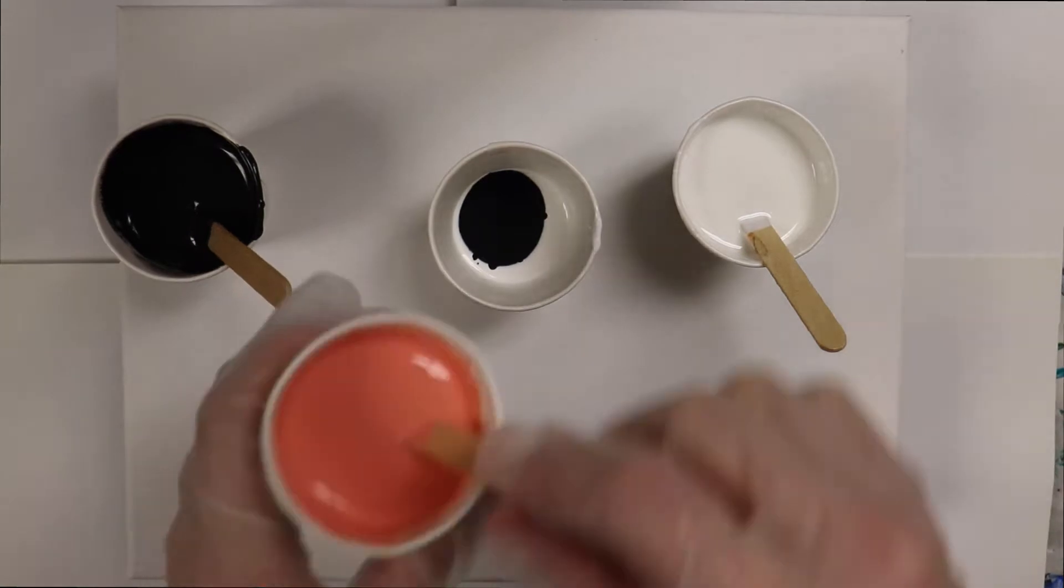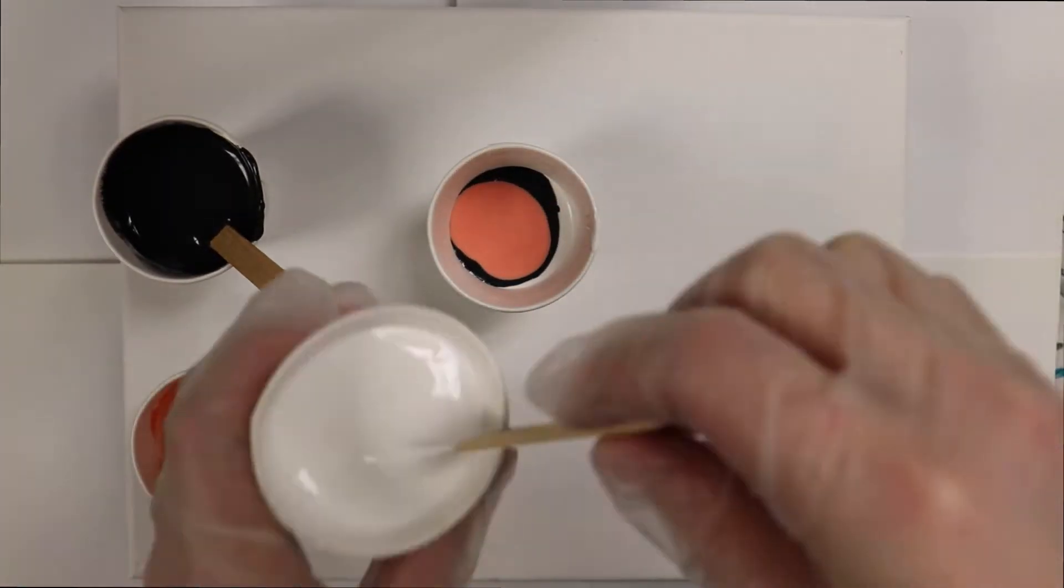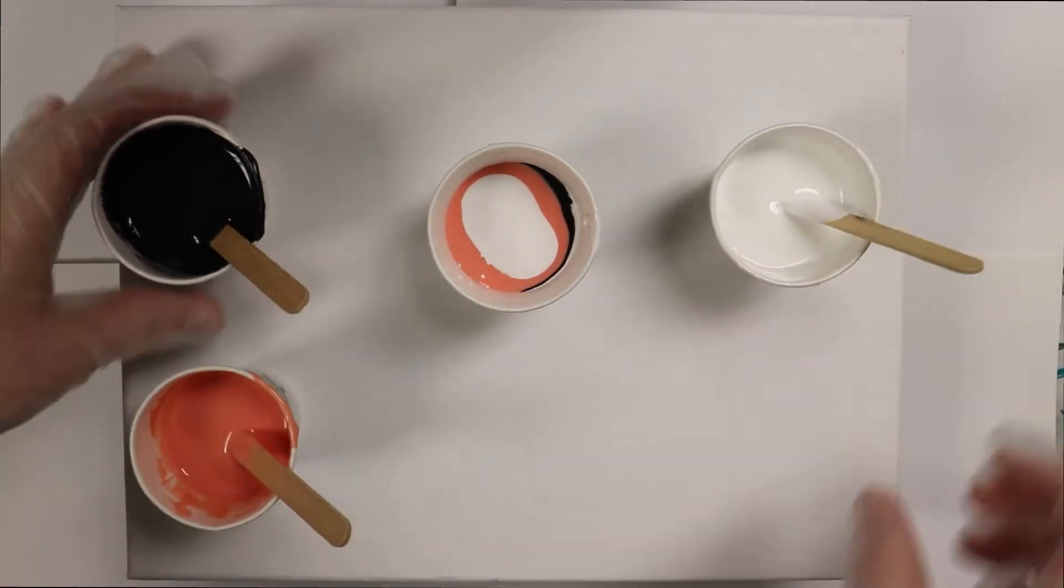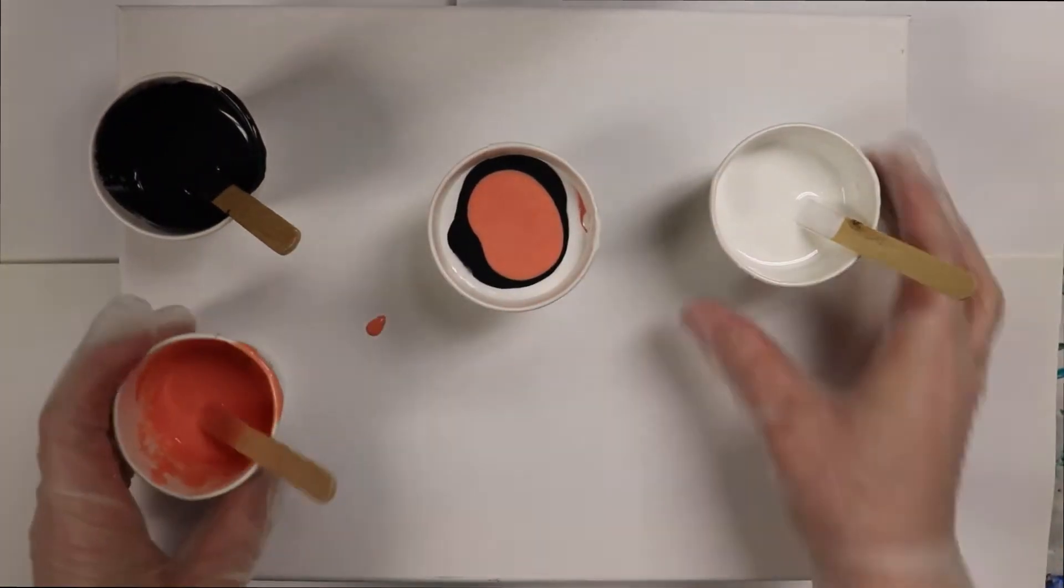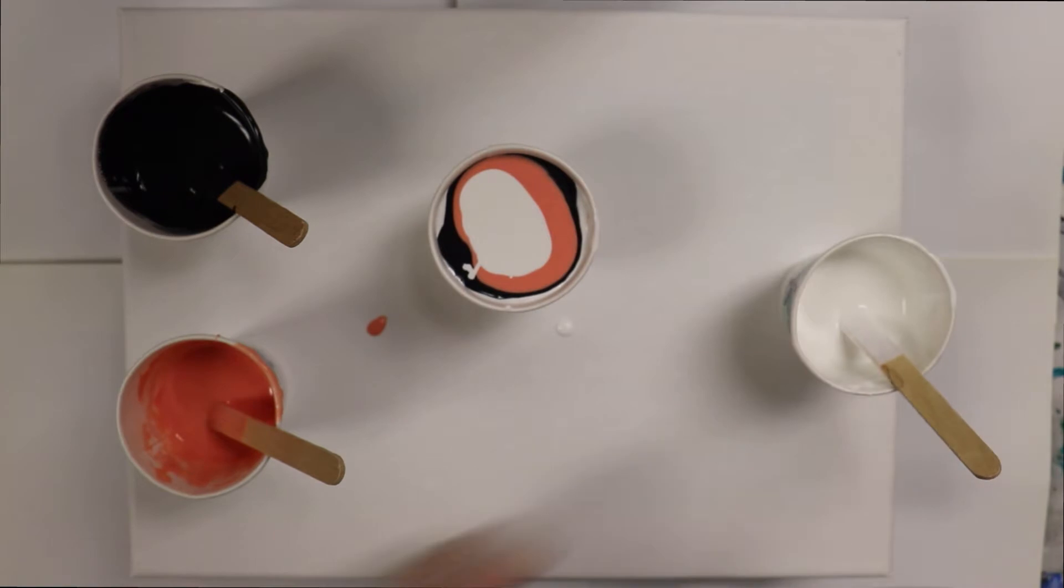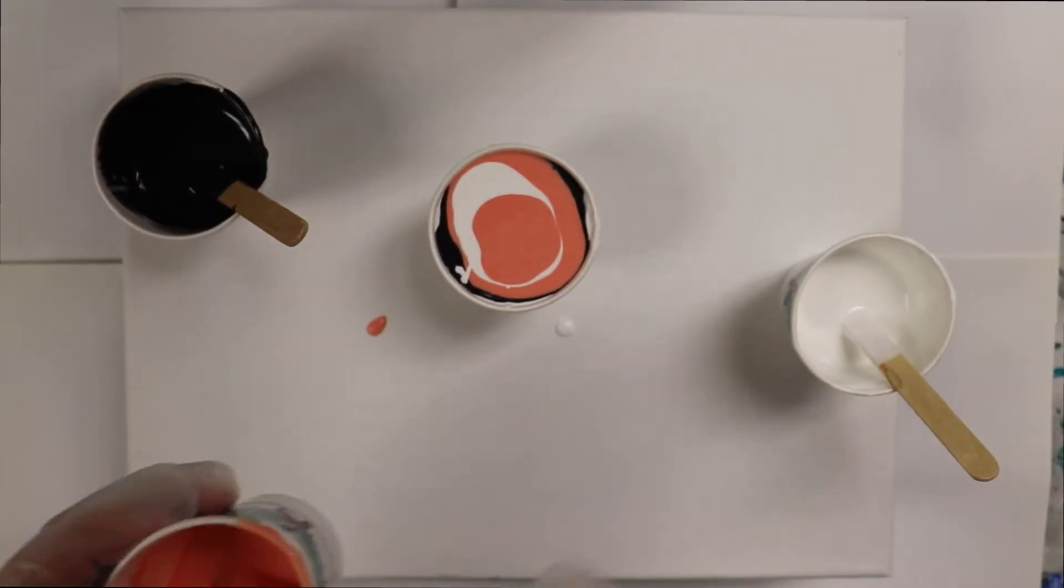This is the part where it really starts to get fun. Then take your separate mixing cup and start pouring a little bit of each color into your cup and just keep layering it until your cup is pretty close to full.